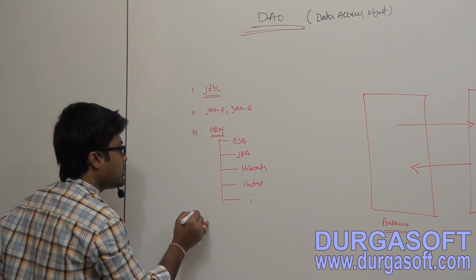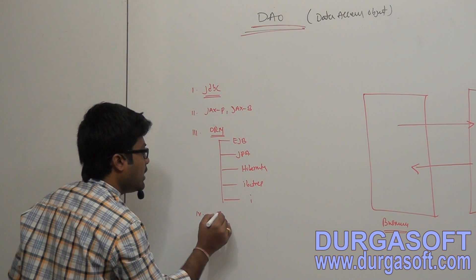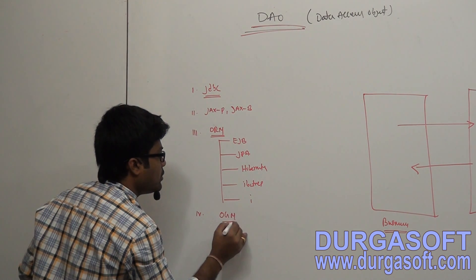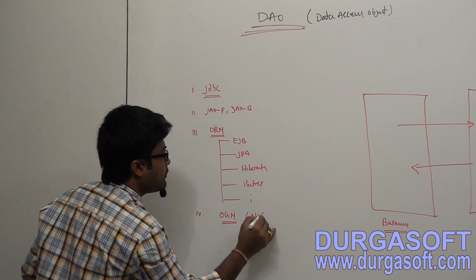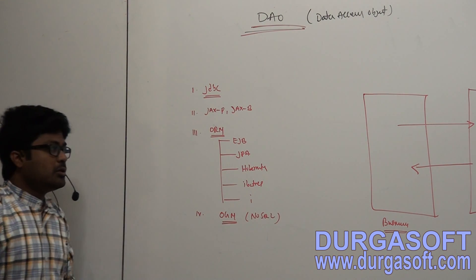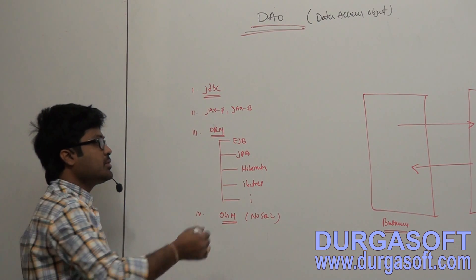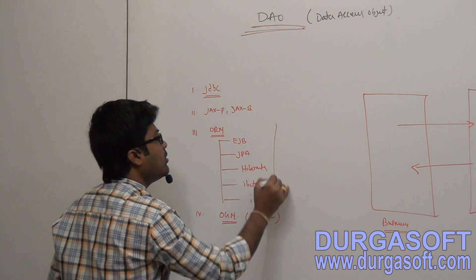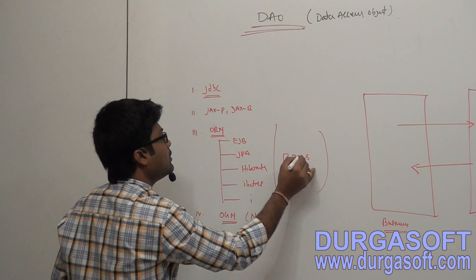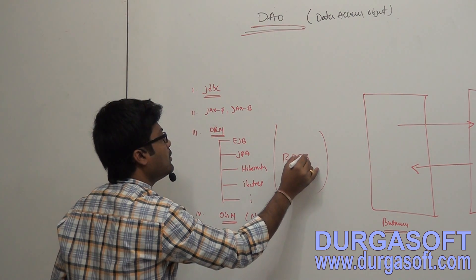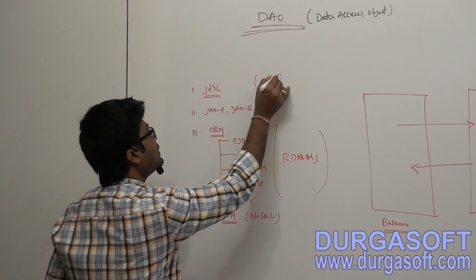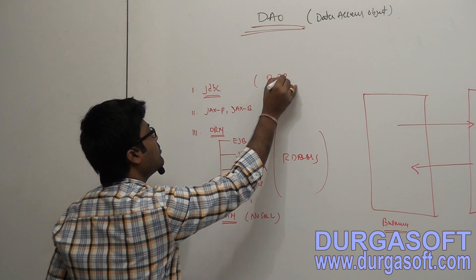To interact with databases, we have ORM tools — EJB, JPA, Hibernate, IBATIS. By using these ORM tools we can access data from a database. To interact with non-SQL databases, we have OGM kind of tools. In Spring, they also provide Spring JDBC and Spring ORM. By using Spring JDBC or Spring ORM, you can interact with RDBMS machines.